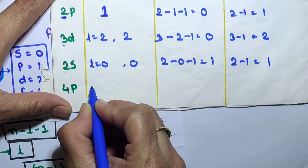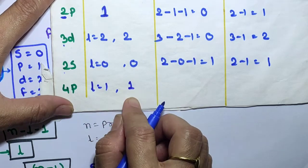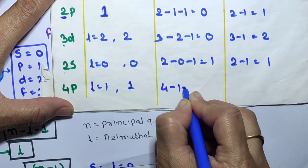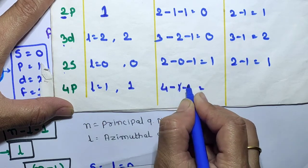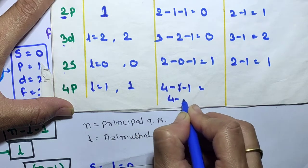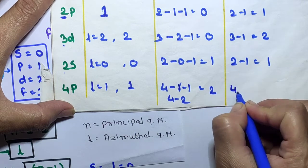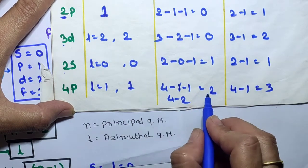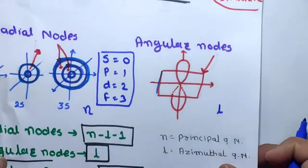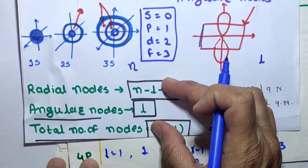For the 4p orbital, L = 1, so angular nodes = 1. Radial nodes = n − L − 1 = 4 − 1 − 1 = 2. Total number of nodes = n − 1 = 4 − 1 = 3, which equals 1 + 2 = 3. In this way, we can easily calculate the radial nodes, angular nodes, and total number of nodes using these formulas.